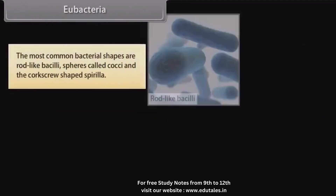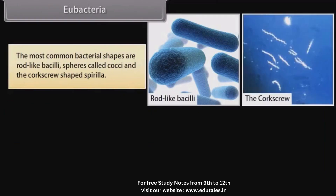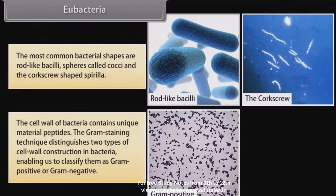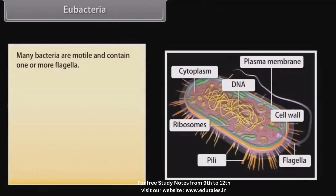The most common bacterial shapes are rod-like bacilli, spheres called cocci, and the corkscrew-shaped spirula. The cell wall of bacteria contains unique material — peptidoglycan. The Gram staining technique distinguishes two types of cell wall construction in bacteria, enabling us to classify them as gram-positive or gram-negative. Many bacteria are motile and contain one or more flagella.